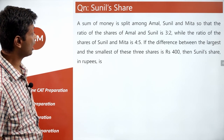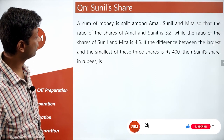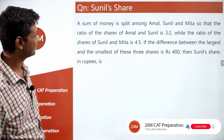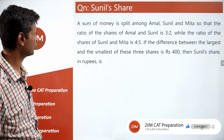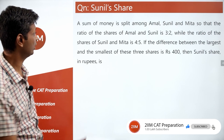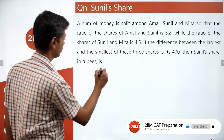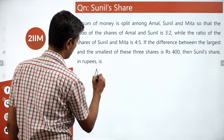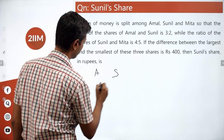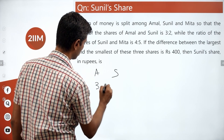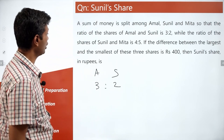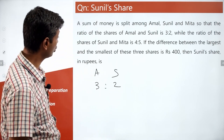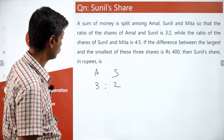A sum of money is split among Amal, Sunil, and Mita — A, S, and M — so that the ratio of the shares of Amal and Sunil is 3:2, while the ratio of shares of Sunil and Mita is 4:5.